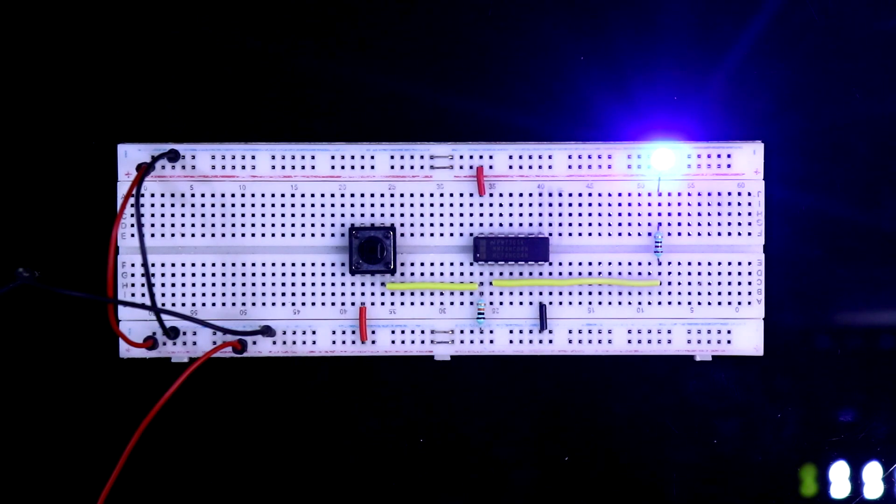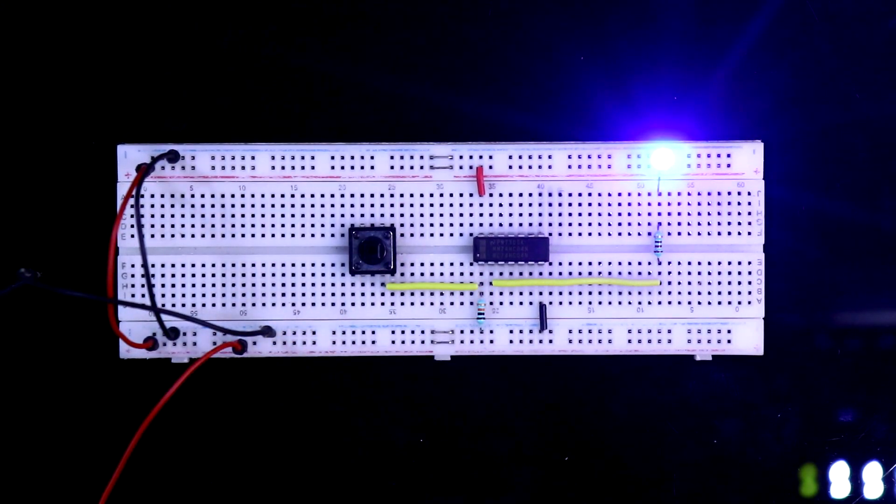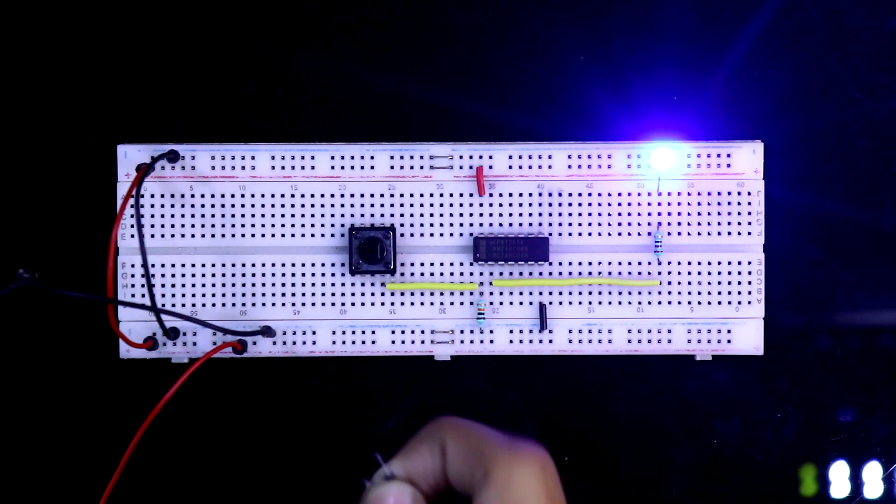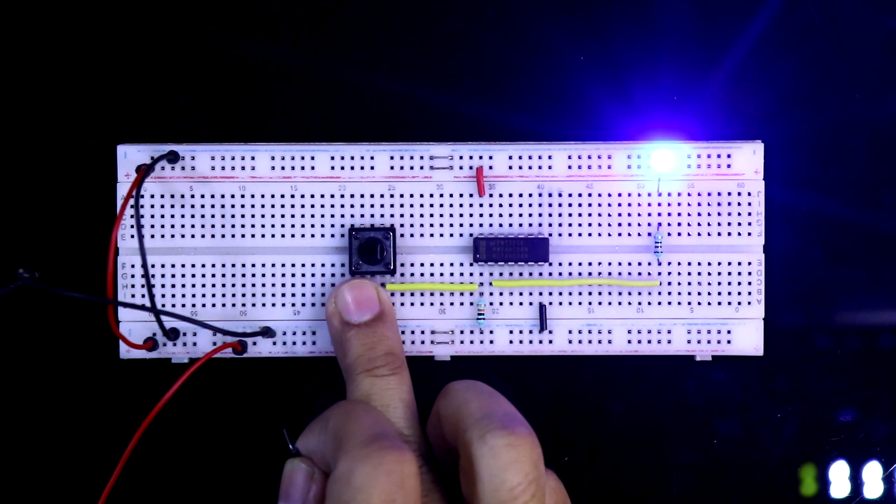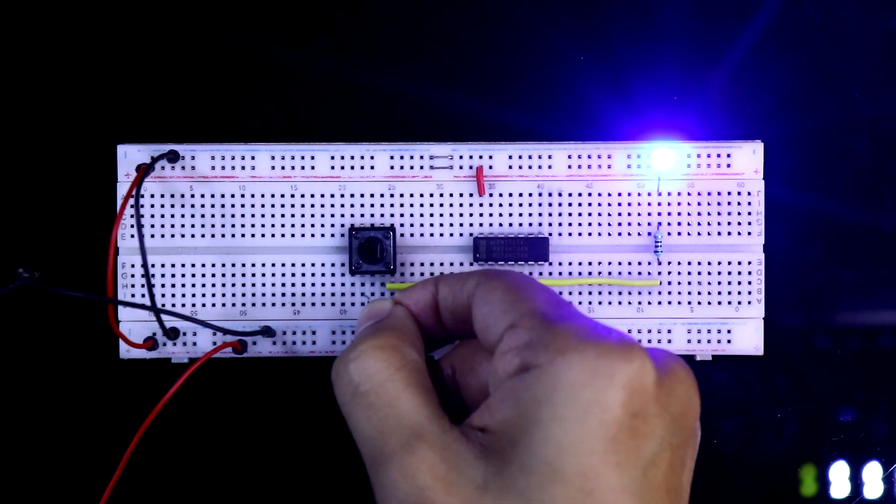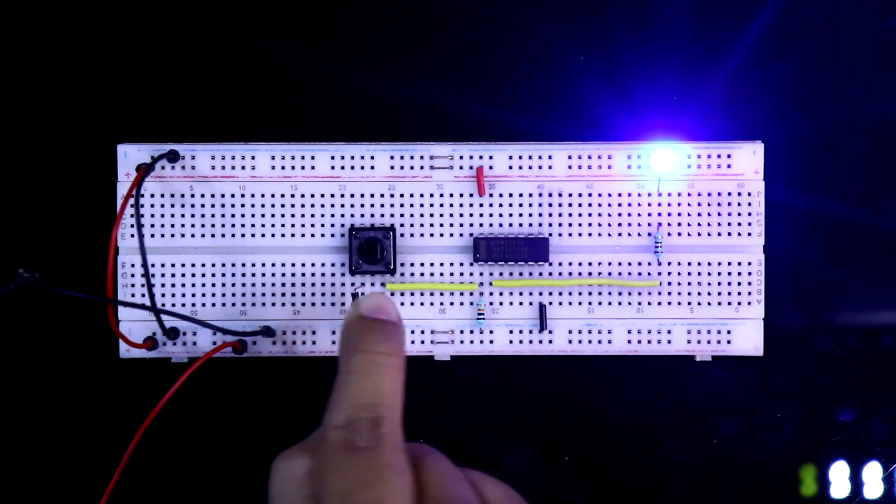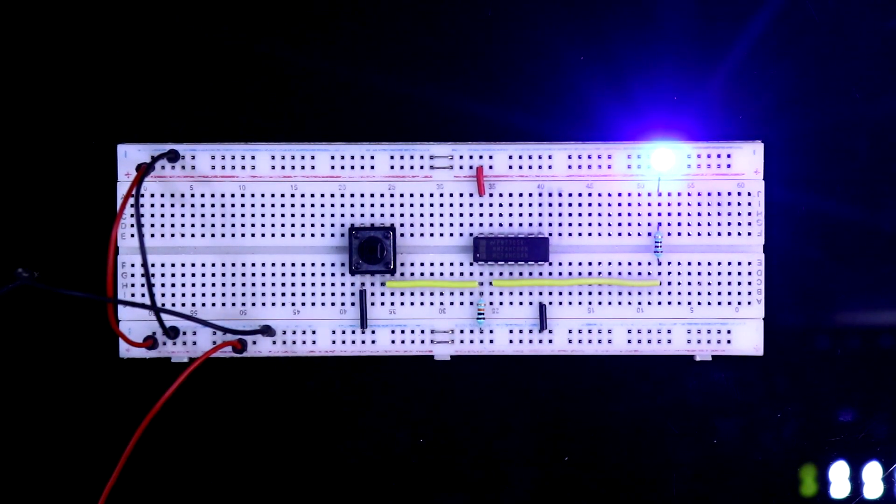Now when should we use the pull-up resistor? If the input should be low after pressing the switch, then we should use the pull-up resistor. In this condition, we have to use pull-up resistor.